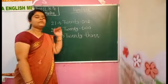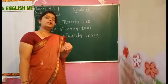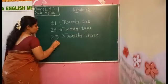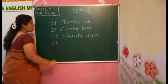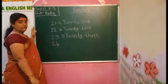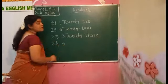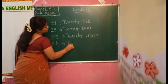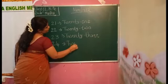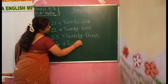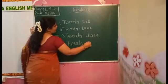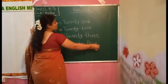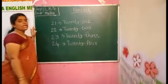After 23, which number will come, children? That is 24. The number name of 24 is spelled T-W-E-N-T-Y F-O-U-R. 24.